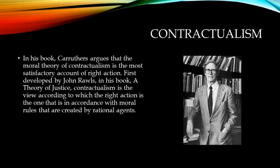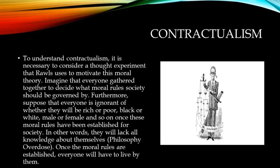In his book, Carruthers argues that the moral theory of contractualism is the most satisfactory account of right action. First developed by John Rawls in A Theory of Justice, contractualism is the view according to which the right action is the one that is in accordance with moral rules created by rational agents. To understand contractualism, consider the thought experiment Rawls uses to motivate this moral theory. Imagine that everyone gathered together to decide what moral rules society should be governed by, and suppose that everyone is ignorant of whether they will be rich or poor, black or white, male or female once these moral rules have been established — they will lack all knowledge about themselves.